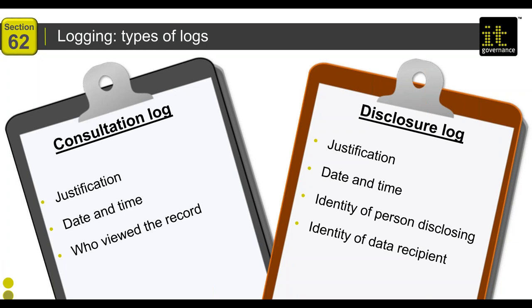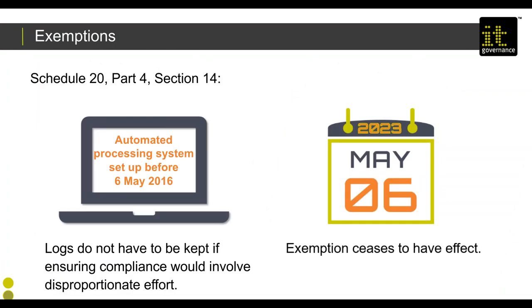The logs must record the identity of recipients and justification for disclosure — this is how the ICO holds you to account: who looked at these records and who did you share the information with, and why? There is an exemption at Schedule 20, Part 4, Section 14: if your automated processing systems were set up before 6th May 2016, you do not have to apply these logging rules, and this exemption remains in effect until 6th May 2023. For new systems, you must include the capability to log all six log types — almost like data protection by design and by default.